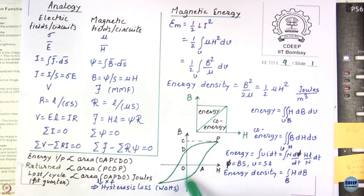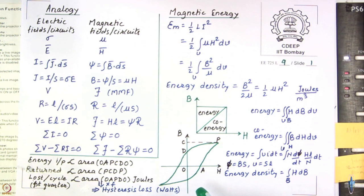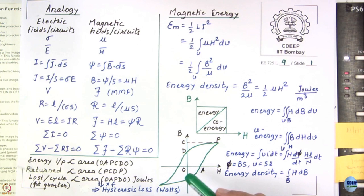Now we look at hysteresis of ferromagnetic materials, which we introduced in the previous lecture. The area of the hysteresis loop gives the hysteresis loss. To understand why this is a loss: input is given to the magnetic circuit, some energy is returned to the source, and the difference is dissipated as loss.